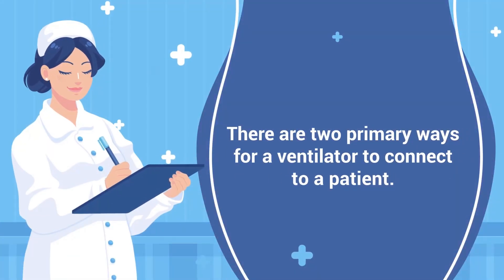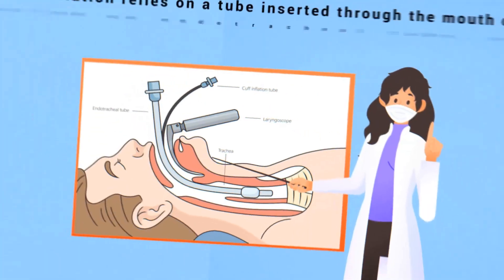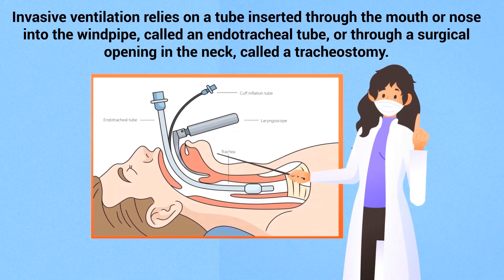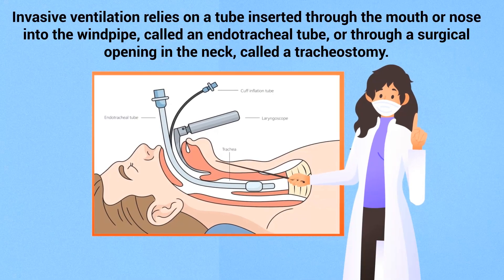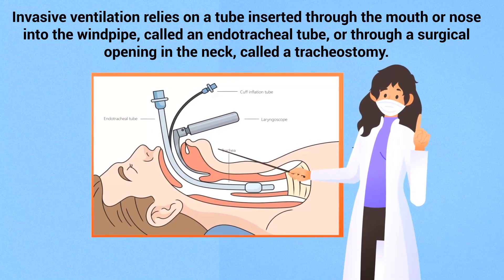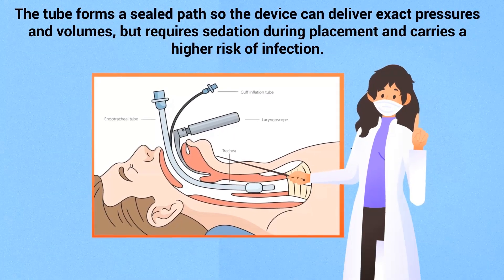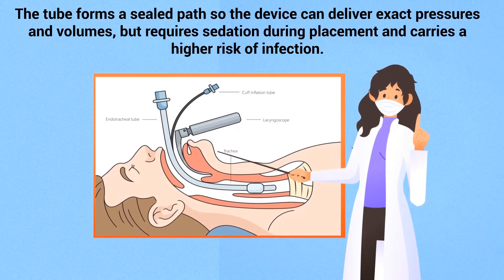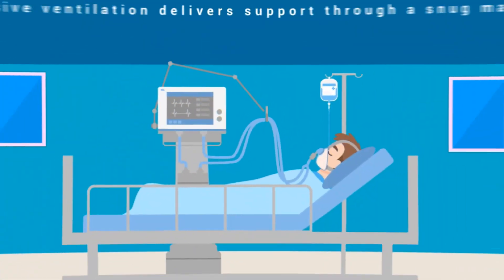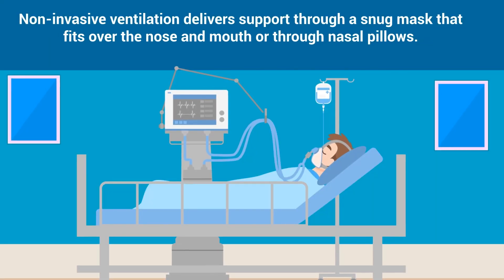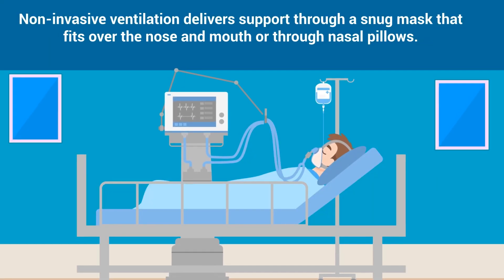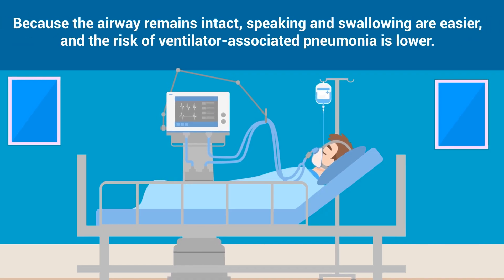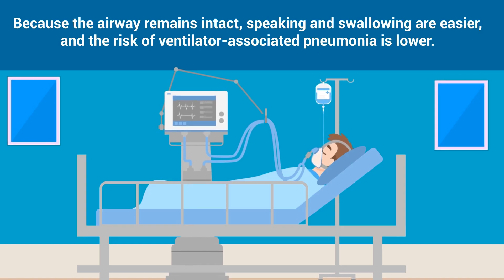There are two primary ways for a ventilator to connect to a patient. Invasive ventilation relies on a tube inserted through the mouth or nose into the windpipe, called an endotracheal tube, or through a surgical opening in the neck, called a tracheostomy. The tube forms a sealed path so the device can deliver exact pressures and volumes, but requires sedation during placement and carries a higher risk of infection. Non-invasive ventilation delivers support through a snug mask that fits over the nose and mouth or through nasal pillows. Because the airways remain intact, speaking and swallowing are easier, and the risk of ventilator-associated pneumonia is lower.